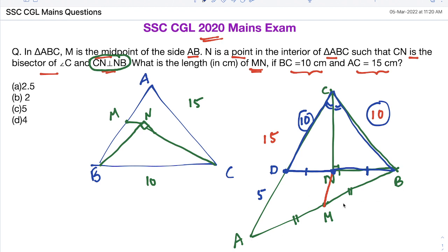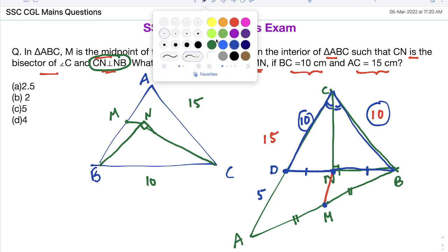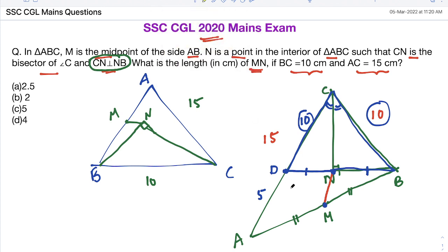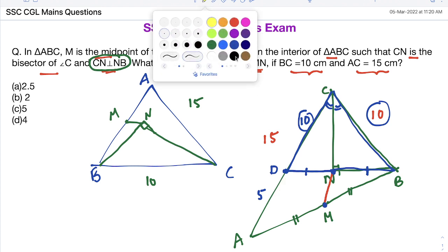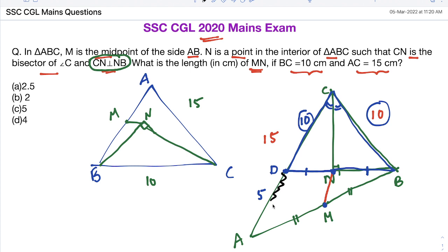Now observe, for the side DB, N is the midpoint, and for the side AB, M is the midpoint. Now in triangle ADB, observe carefully, in triangle ADB, N and M are the midpoints of the sides BD and BA.